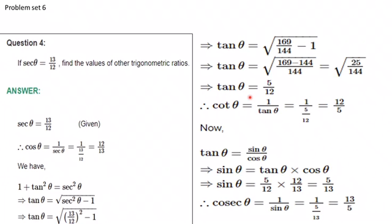Taking square root of both sides, tan theta equals 5 upon 12. So cot theta is 1 upon tan theta, which is 12 by 5. Since tan theta equals sin theta by cos theta, sin theta equals tan theta into cos theta: substituting 5 upon 12 into 12 by 13 — the 12s cancel — giving sin theta equals 5 upon 13. Therefore cosec theta is 1 upon sin theta, which is 13 by 5. These are all the trigonometric ratios for this 3-mark question.